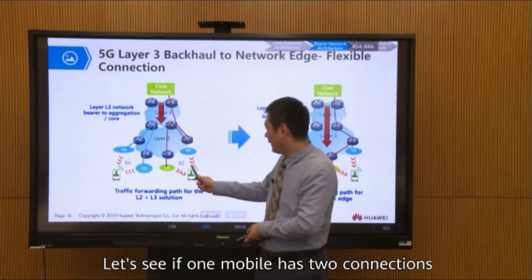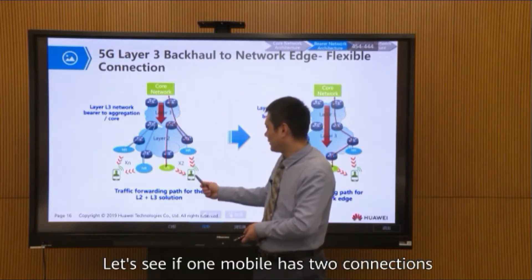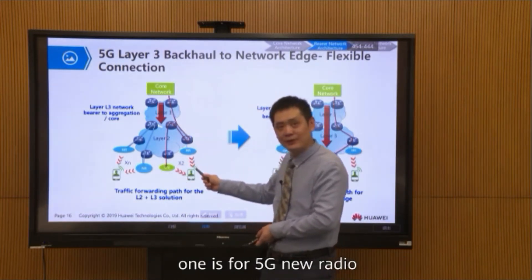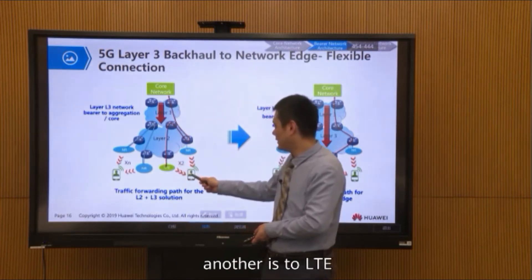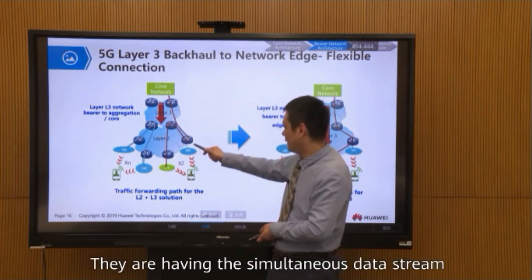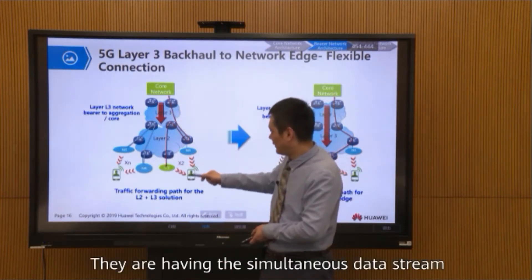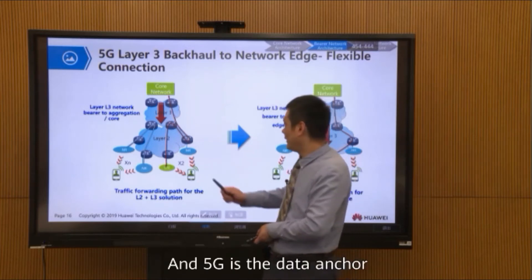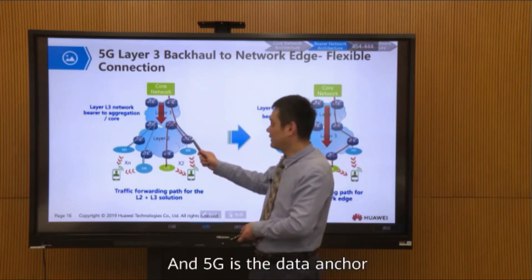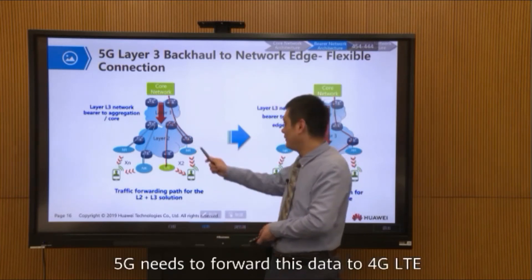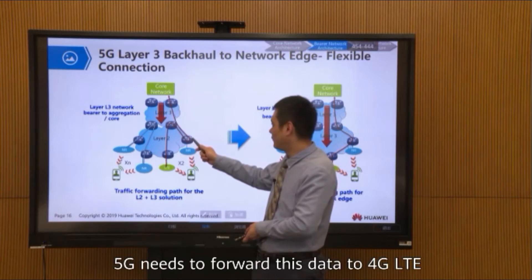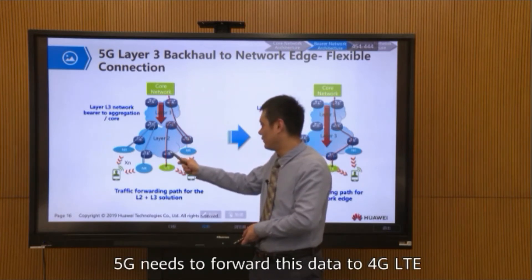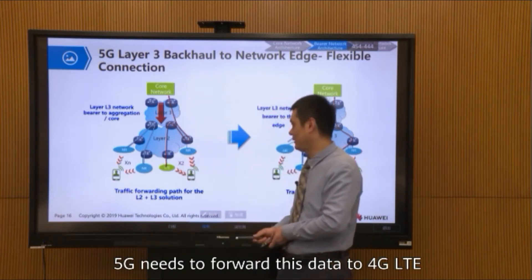If one mobile has two connections — one is for 5G new radio and another is for LTE — they are having simultaneous data streams. And 5G is the data anchor. 5G needs to forward this data to 4G, to LTE.